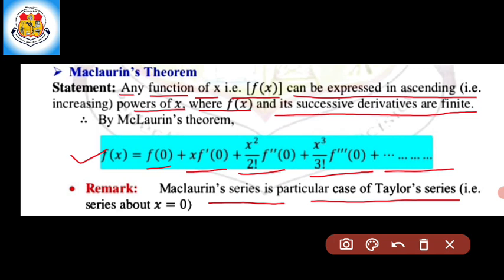In the Taylor series expansion in terms of x minus a, if we put the value of a as 0, we get the Maclaurin series expansion. That is, in Taylor series expansion about the point x equal to a, if we find the Taylor series about the point x equal to 0, that is nothing but the Maclaurin series. So Maclaurin's series is a particular case of Taylor series expansion.